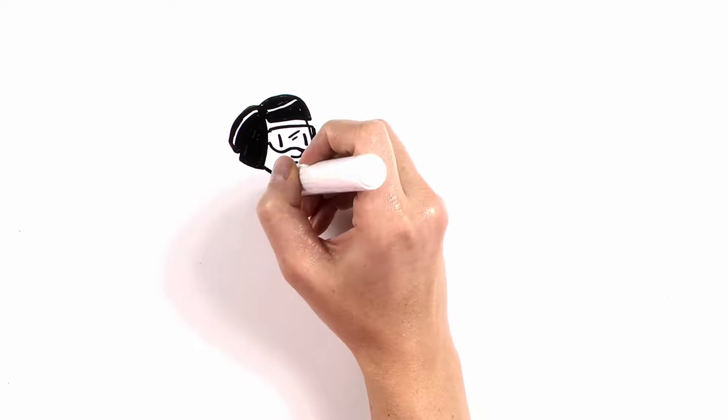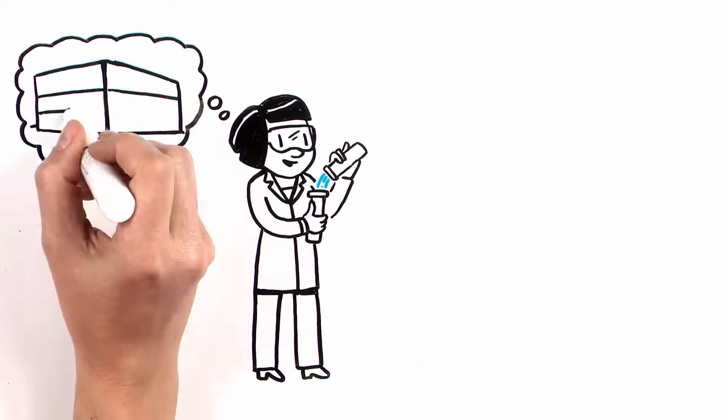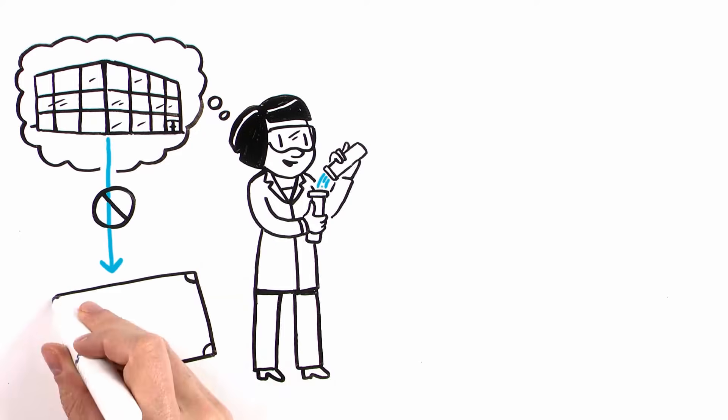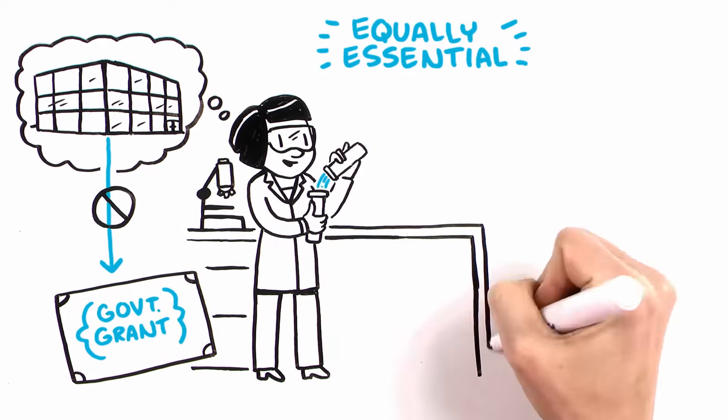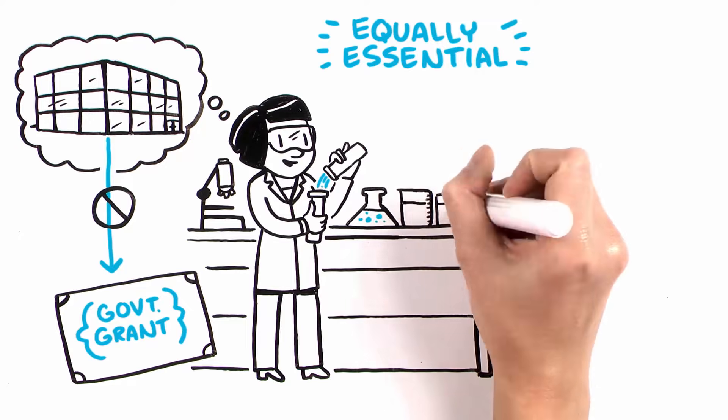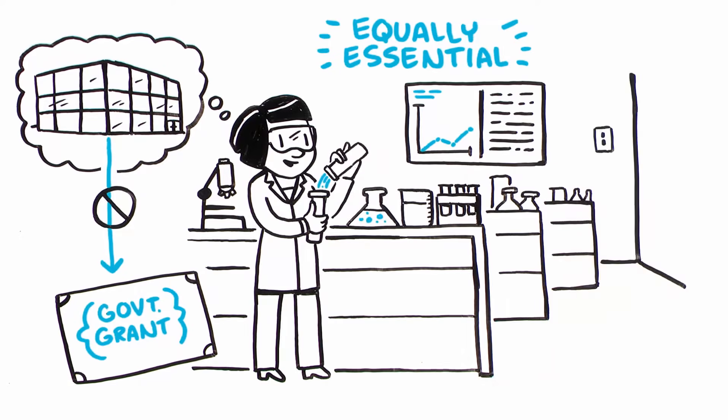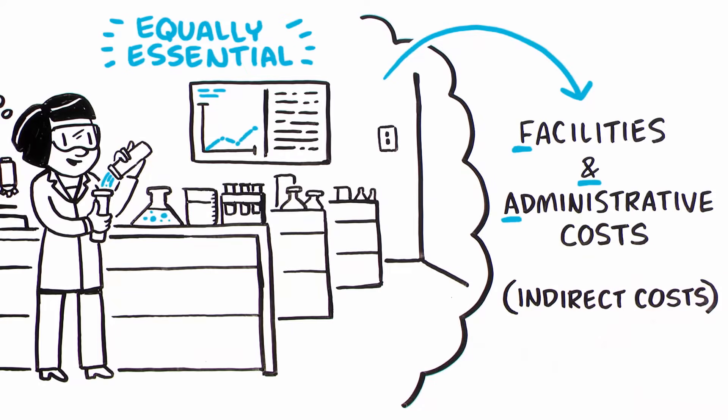To conduct their research, however, scientists need other institutional research infrastructure and support services normally not allowed to be paid directly to them as part of a government grant. These equally essential institutional expenses for research are reimbursed to each university in the form of facilities and administrative costs. These are research operating costs, also called F&A or indirect costs.